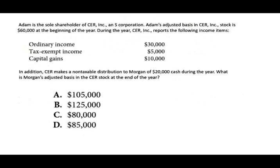Let's take a look at this question. Adam is a shareholder of CER Inc., an S Corp. Adam's adjusted basis in the stock is $60,000 at the beginning of the year. During the year, CER reports the following income items: ordinary income, tax-exempt income, and capital gain. In addition, CER makes a non-taxable distribution to Adam of $20,000. What is Adam's adjusted basis at year end? This is a very classic question you will see on the CPA exam — what is your ending basis for that S corporation?